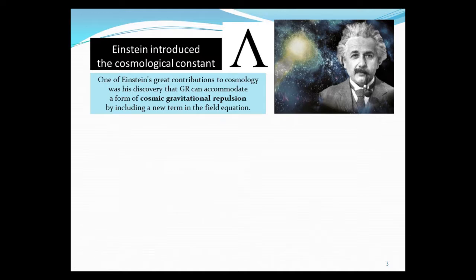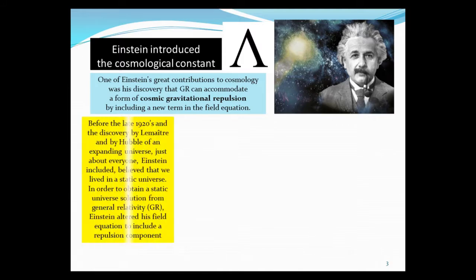One of Einstein's great contributions to cosmology was his discovery that general relativity can accommodate a form of cosmic gravitational repulsion by including a new term in his field equations. Before the late 1920s and the discovery by Lemaitre and Hubble of an expanding universe, just about everyone, Einstein included, believed that we lived in a static universe.